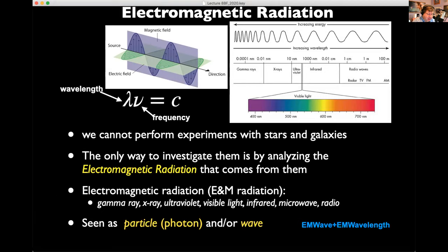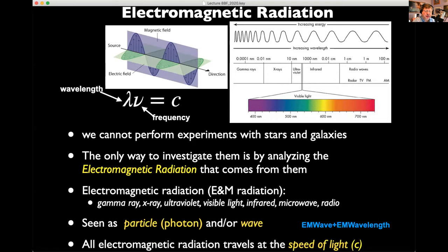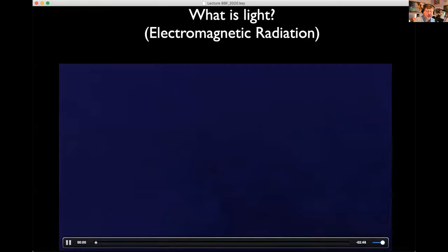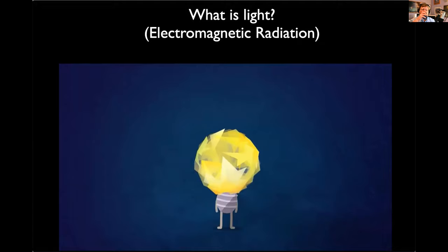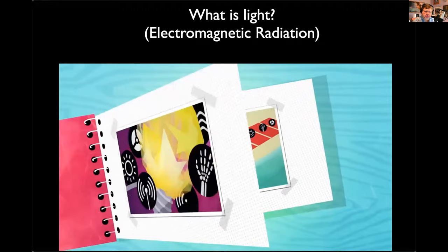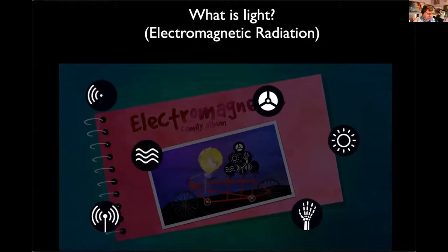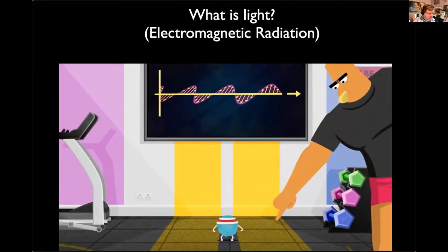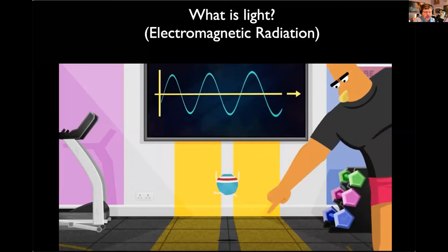All electromagnetic radiation travels at the speed of light. Light isn't just what we can see — it can be broken up into different types, and we call the whole family the electromagnetic spectrum. Even when it's dark, light is still all around us. Light can be created by making an electron oscillate, which creates an oscillating magnetic field and an oscillating electric field — what we call an electromagnetic wave, or light.